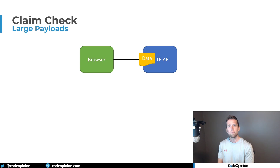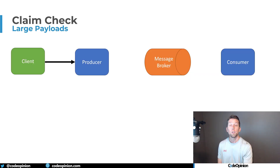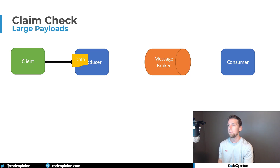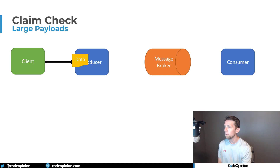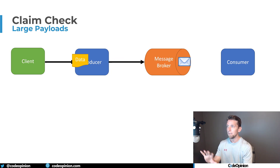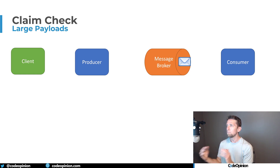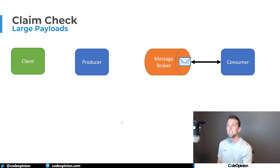Instead, what I'd rather do is have them upload the file and then do that processing separately. With a message broker, our client — the browser — still uploads data to our HTTP API. Our HTTP API is the producer: once it gets the data from the upload, it creates a message and sends it to the message broker. At that point, we can return back to the client saying we haven't processed your file yet, but we've accepted it. Then separately, our consumer can consume that message and process it completely asynchronously.